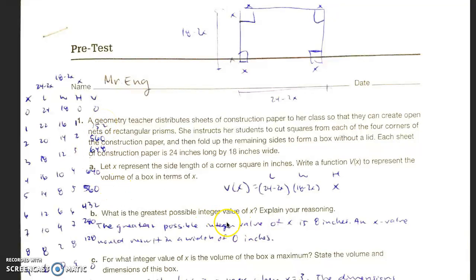So here they're looking for the greatest possible integer value which is 8, because it gives you a positive number. If you choose 9, it'll give you a volume of 0.